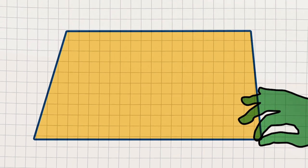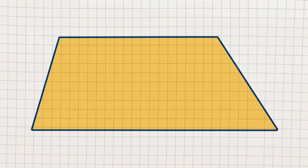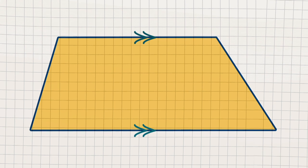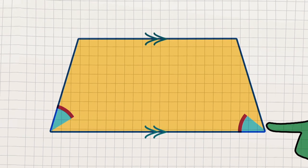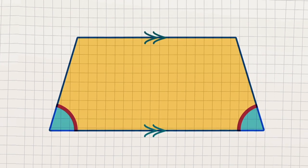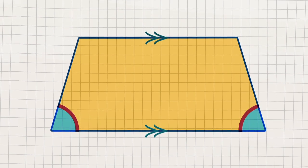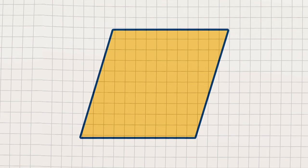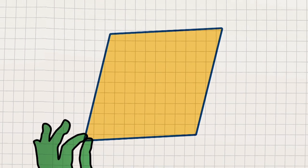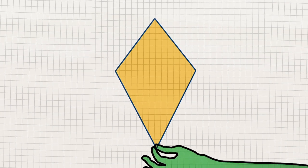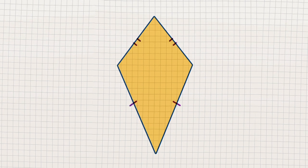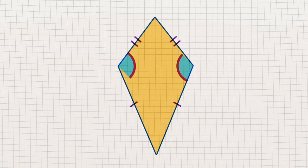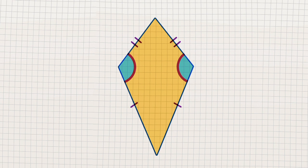Pull the bottom corner to get a trapezium — they've got one pair of parallel sides. If both the bottom angles are the same, a special isosceles trapezium's the name. We can push it back into a rhombus if you like, then give the bottom side a pull and twist the shape to get a kite, with two pairs of equal adjacent sides and one pair of equal angles, but no parallel lines.